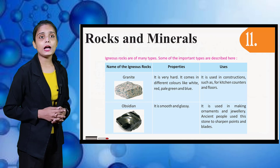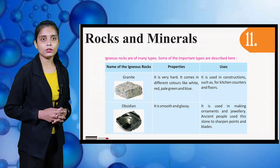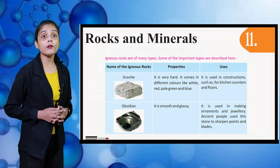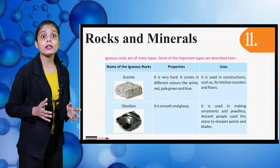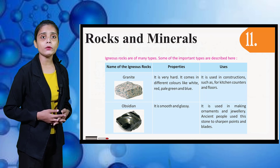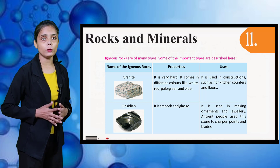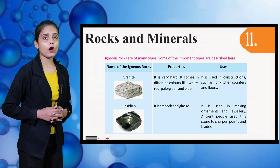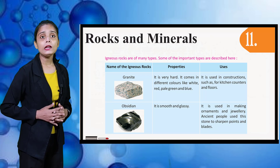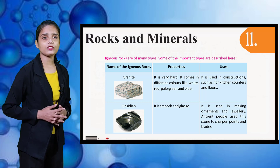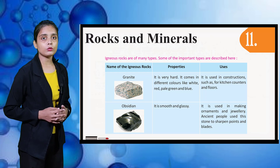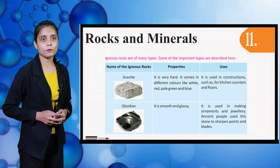First is Granite. It is very hard and comes in different colors like white, red, pale green, and blue. If you talk about the use of granite, it is used in construction, such as for kitchen counters and floors.